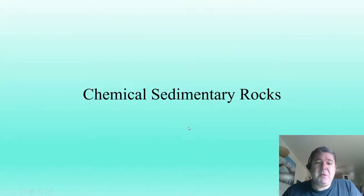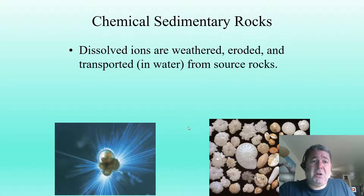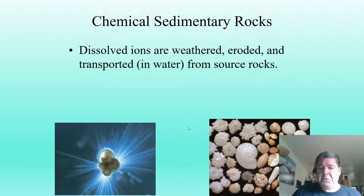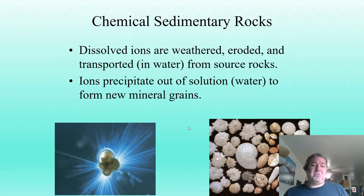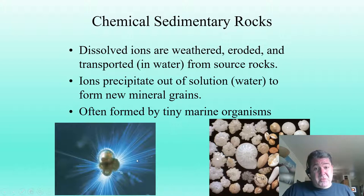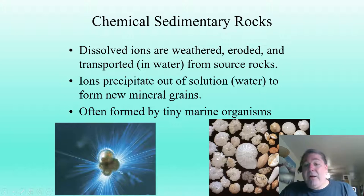This is all about chemical sedimentary rocks. Unlike clastic sedimentary rocks, chemical sedimentary rocks come from dissolved ions obtained through chemical weathering. They're transported in water from their source and then precipitate out of solution to form new mineral grains. This can be done organically by tiny single-cell organisms called foraminifera — these are all different little shells that they make, with feeders they stick out to gather food.